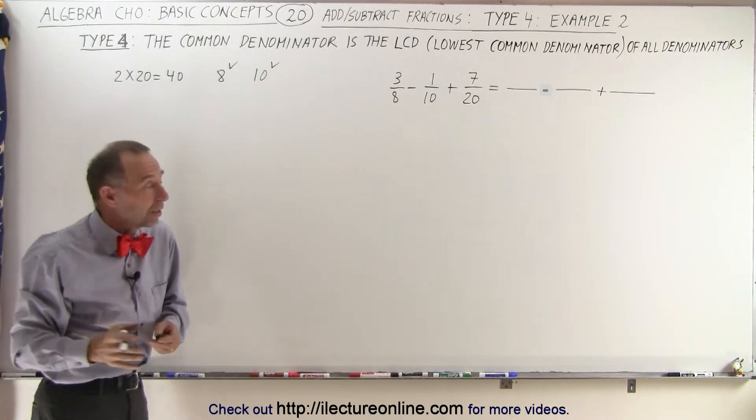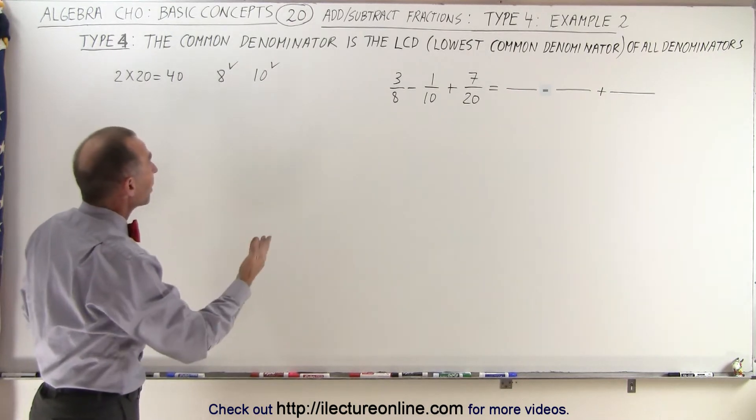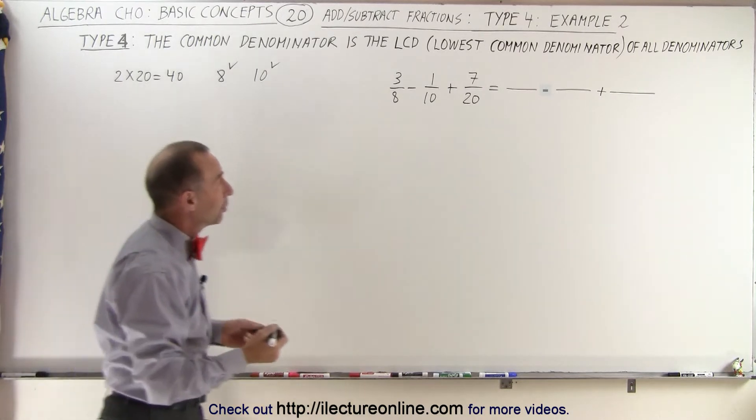So here you can see that this method is by far the quickest and easiest of the two methods because we immediately, on the first try, already found the lowest common denominator, which is going to be 40.